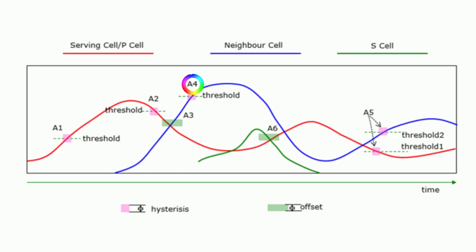Event A5. When the serving cell's signal becomes worse than threshold 1 and a neighboring cell's signal surpasses threshold 2, this event is triggered. It indicates degraded serving cell conditions while a neighboring cell offers better signal, suggesting a handover.